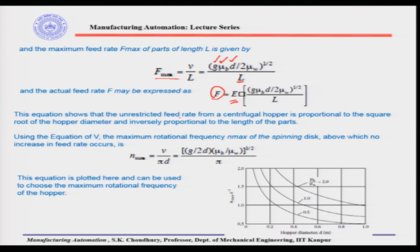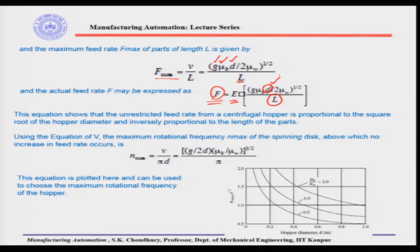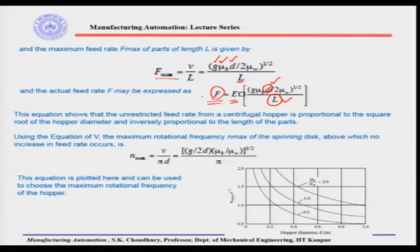This equation shows that the unrestricted feed rate from a centrifugal hopper is proportional to the square root of the hopper diameter and inversely proportional to the length of the part. Since we know the feed rate depends on the square root of the hopper diameter, if we cannot change the part length we have the hopper diameter as an adjustable parameter. By regulating the hopper diameter, we can determine how much feed rate f to obtain so that the machine neither starves nor clogs — meaning f must match the number of parts the assembly machine requires.